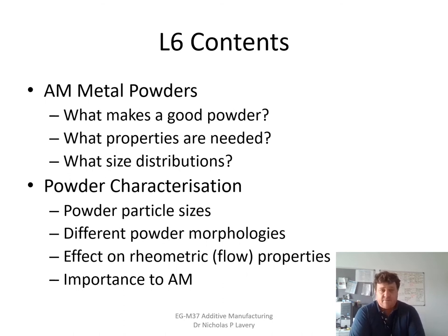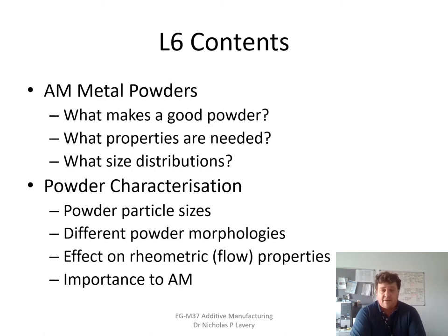In eLecture 6 we will mainly talk about the characterisation of metal powders: what makes a good powder for additive manufacturing, what properties are needed, and what typical size distributions of the powder particles look like. We need to understand how we characterise a powder before we can determine what is good for the process. I'm going to cover particle size distributions, morphologies of powder particles, and rheometric and flow properties.